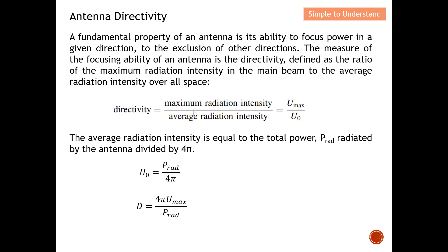The average radiation intensity equals the total radiated power (P_radiation) divided by 4π. Substituting this into the directivity formula and rearranging, directivity equals the maximum radiation intensity multiplied by 4π, divided by the total radiated power. So directivity is a function of maximum radiation intensity over the power radiated.